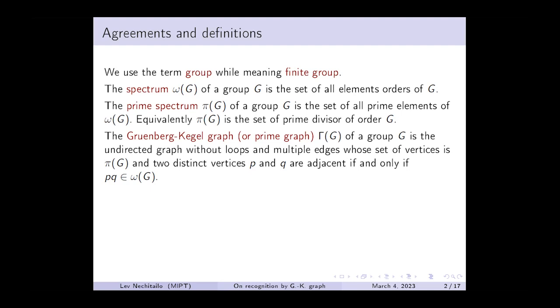All groups under consideration are finite. We say the spectrum ω(G) of a group G is the collection of all element orders of G, and the prime spectrum π(G) is the collection of all prime divisors of the order of G. The Gruenberg-Kegel graph is an undirected graph without loops and multiple edges. The vertex set is π(G), and distinct vertices p and q are adjacent if and only if there is an element of order pq in ω(G).